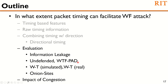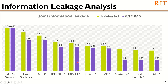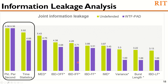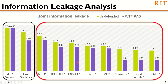We lead our evaluation with the joint information leakage analysis in the WebDA framework. The X axis represents packet per second and timing statistics from prior work and also our 8 timing features, and the Y axis represents the number of bits. This evaluation shows that for undefended data, packet per second and timing statistics leak more information individually than our features. An interesting observation is that WTF-PAD leaks the same amount of information as undefended for packet per second statistics. However, for WTF-PAD, our median features leak more information than timing statistics. Among our feature sets, the median feature leaks more information, followed by inter-burst delay of outgoing and incoming packets.